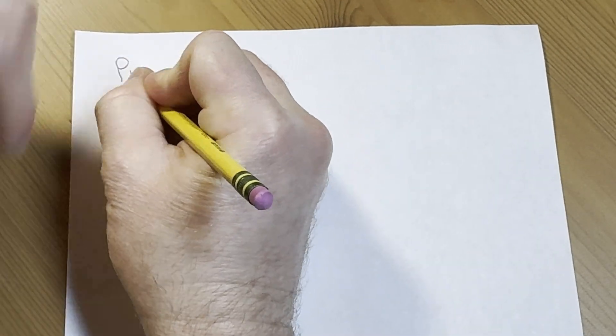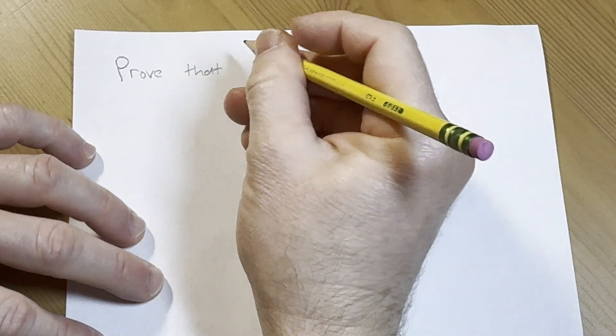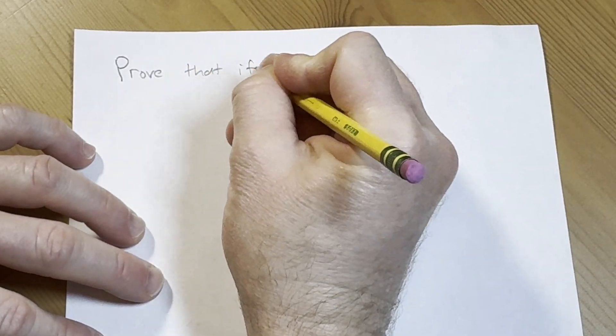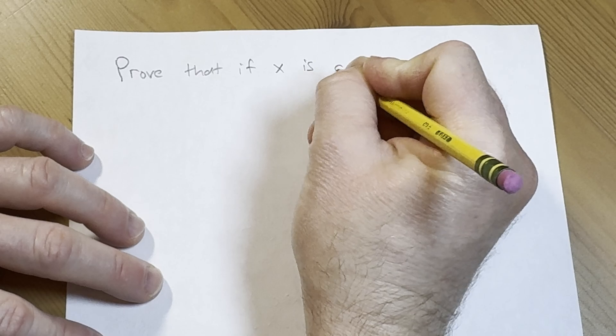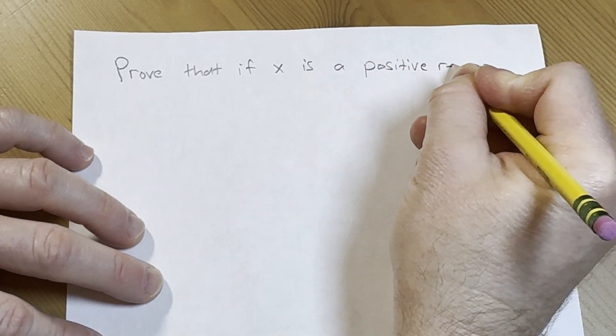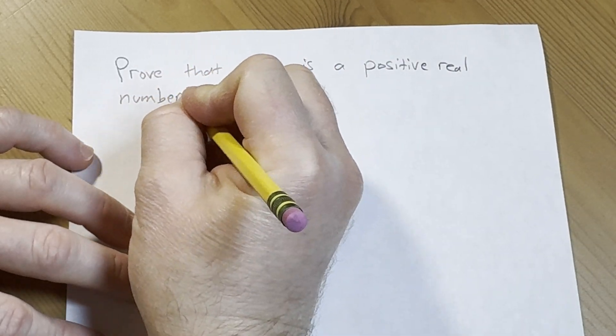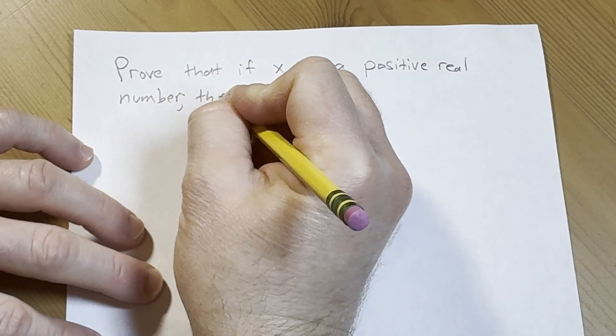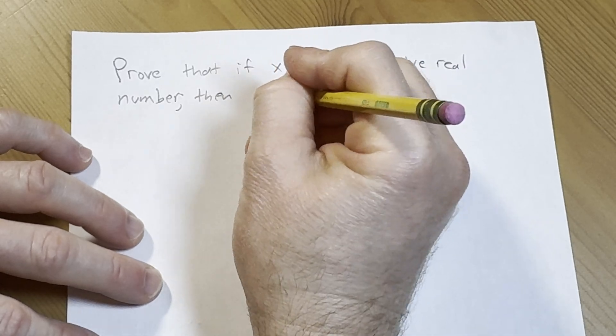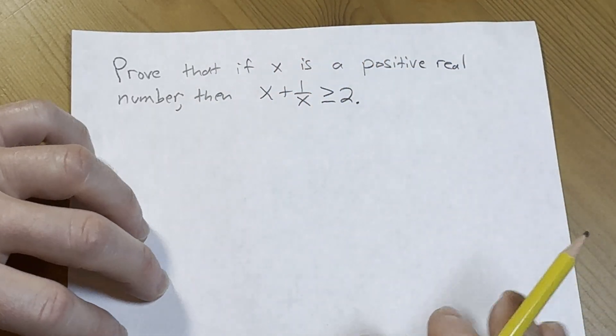So let's go ahead and start by writing down what we are going to prove. Prove that if x is a positive real number, then we have that x plus 1 over x is greater than or equal to 2. So this is what we have to prove.